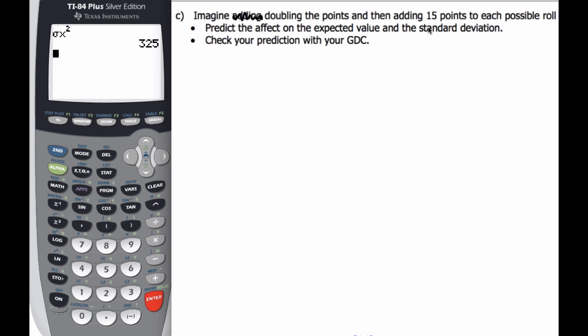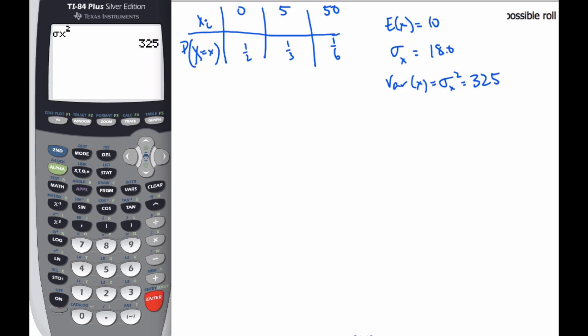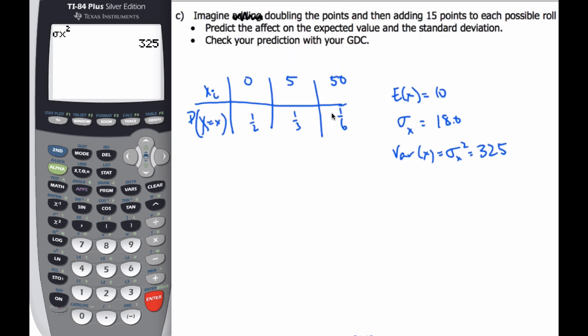All right. Super. Imagine doubling the points, then adding 15 points to each rule. Here's our game. Let's remember our game. So I'm going to double each of these points and add 15 to them. And in doing so, I want to predict what the expected value is and the standard deviation. I want you to take a moment, pause this video, and then actually see what you think you're going to do.